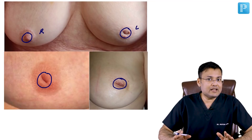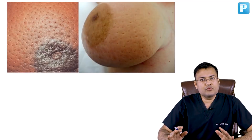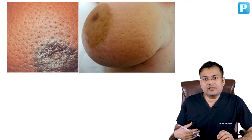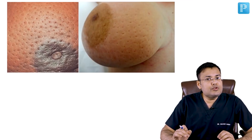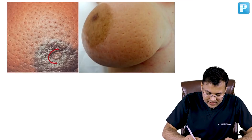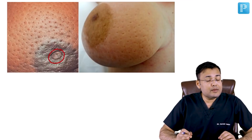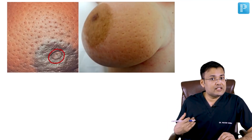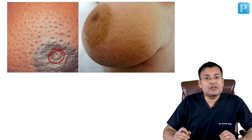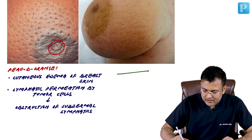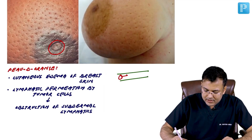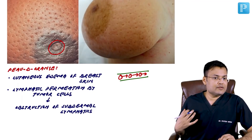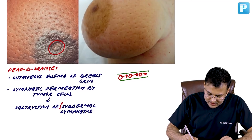In these frequently asked image-based questions, you can notice cutaneous edema in the breast — this appearance is known as peau d'orange. Apart from cutaneous edema, there is also nipple retraction. Peau d'orange is caused by lymphatic obstruction by tumor cells — tumor cells enter and obstruct the lymphatics, resulting in cutaneous edema.